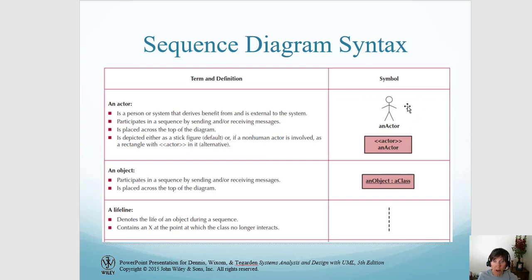Here are the items that you can use on a sequence diagram. You can have an actor, either a human actor that's external to the system or a non-human actor such as an authentication system or database system. In either case, actors are external to the system but they interact with the system, and so we represent them and show those interactions.